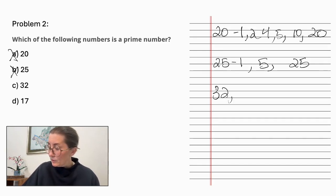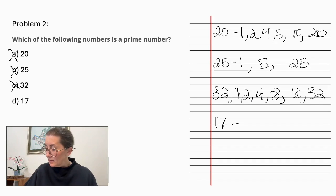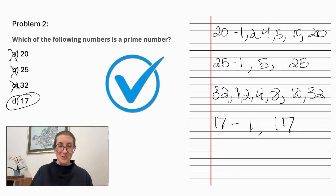32: 1 and 32, 2 and 16, 4 and 8, also not a prime number. 17: 1 and 17 are the only factors. So D, 17 is our answer.